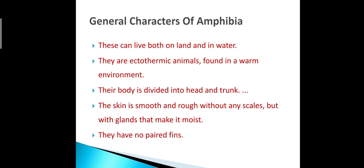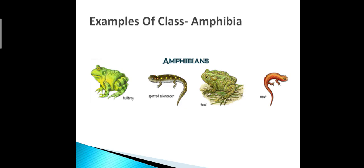There are many more characteristics of Amphibia. They are poikilothermic, meaning cold-blooded animals — they can change their body temperature with respect to the environmental temperature. Sexual dimorphism is well marked and they are oviparous. These are some general characteristics of Amphibia.